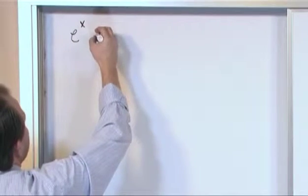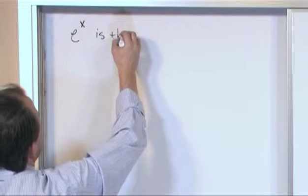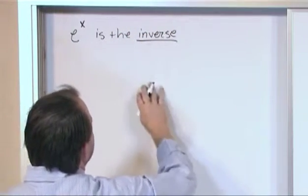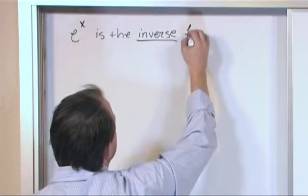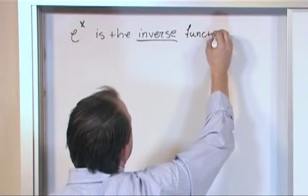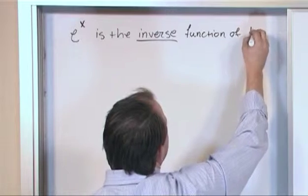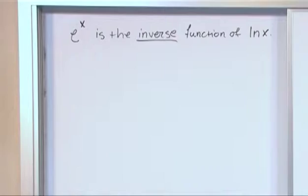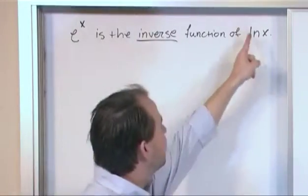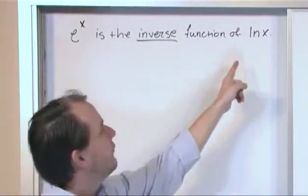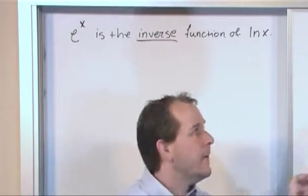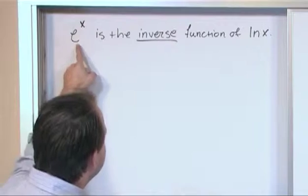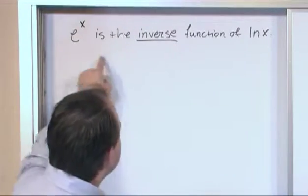So I want to tell you that e raised to the power of x is the, what we're going to call inverse, which you've probably studied before in algebra, is the inverse function of the natural log of x. Now that shouldn't be too much of a surprise to you that this function is an inverse of this function because the natural log is a logarithm with a base e. So there's a base e wrapped up in here. So there's an e wrapped up in here as its base over here. These guys are inverses of one another.